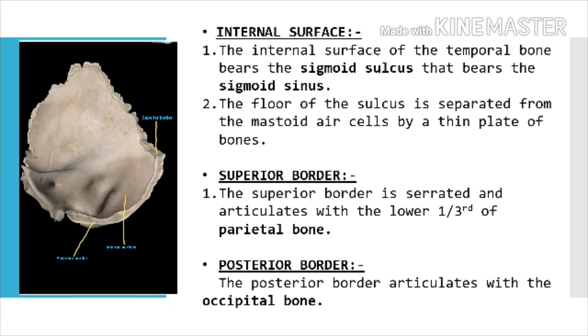The internal surface of the temporal bone bears the sigmoid sulcus, which bears the sigmoid sinus. The floor of the sulcus is separated from the mastoid air cells by a thin plate of bone.